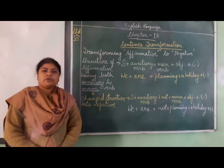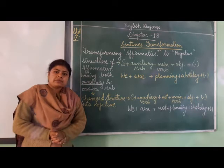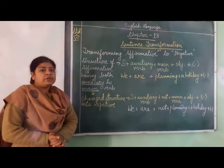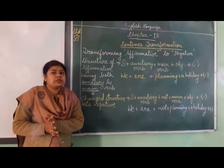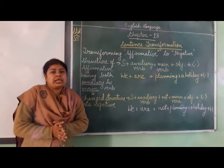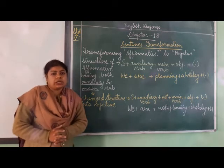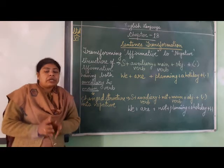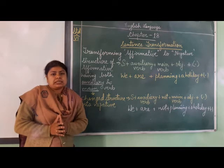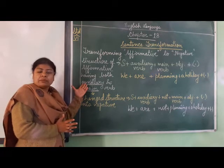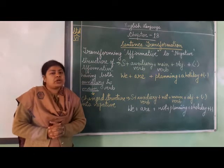Now moving further, we are going to discuss the transformation of an affirmative sentence into negative, which has a structure where both the auxiliary and the main verb are present. Earlier we have seen that only one type of verb is present in the sentence, and accordingly we changed it to the negative form. Now if two types of verbs are present in a sentence — the auxiliary, that is the helping verb, and the main verb — what will we do?